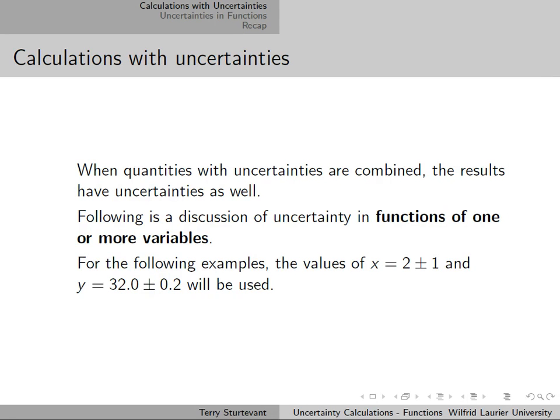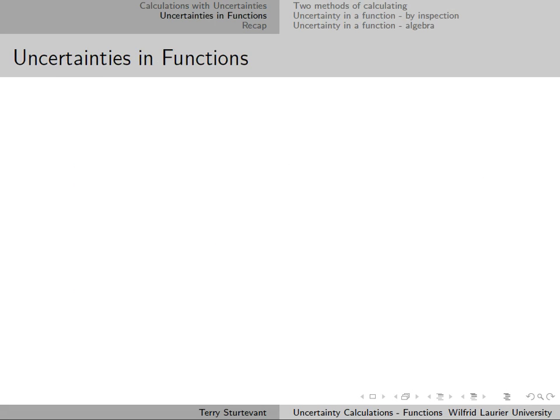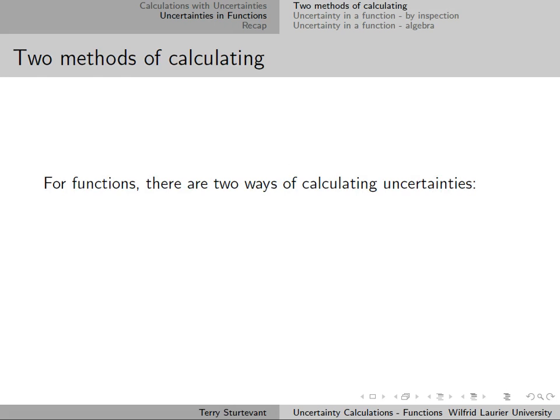For the following example, the value of x equal to 2 plus or minus 1 will be used. There are two methods of calculating uncertainties: inspection and algebra. Both of them will be discussed here.